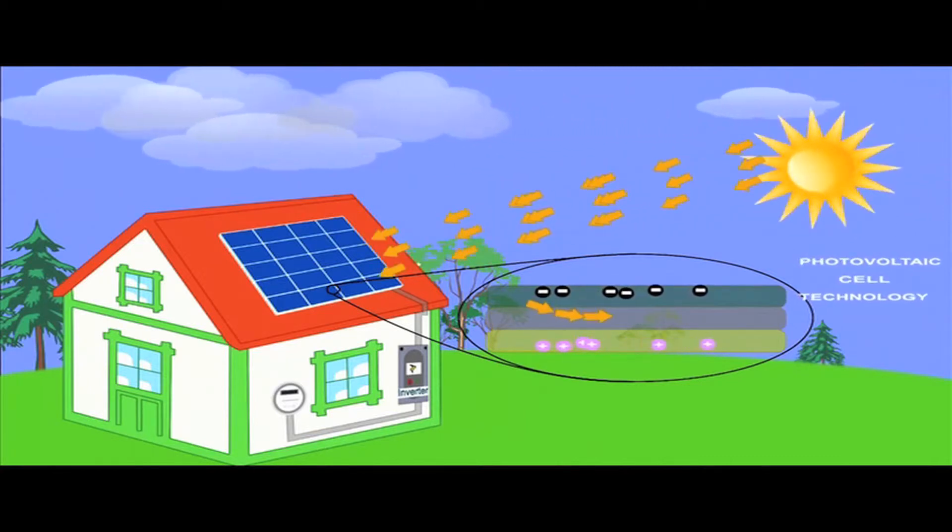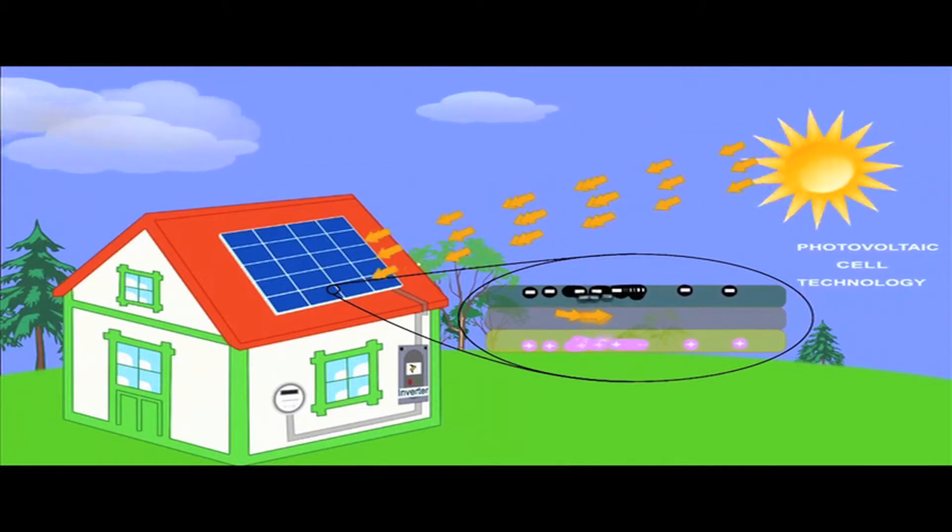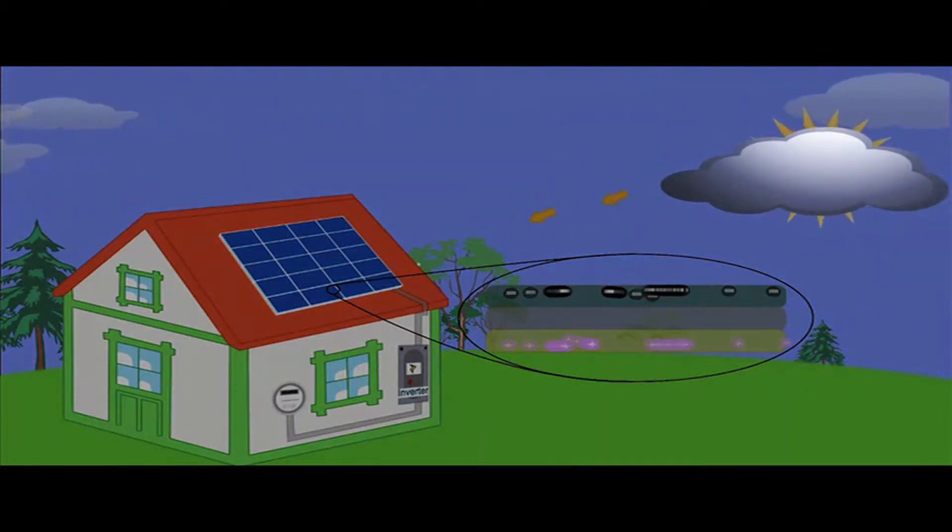The amount of electricity generated depends on the intensity of the sun. But even on cloudy days, your solar panels will still absorb sunlight and generate you energy.